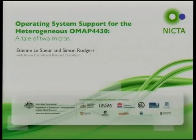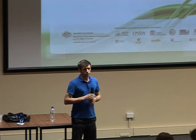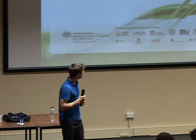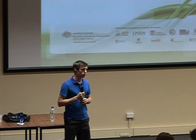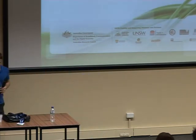We'd noticed that TI had recently announced the new OMAP 4430 processor and a new development kit called the PandaBoard. We took a deeper look and found it had interesting features - it was not just a dual-core Cortex-A9 ARM SoC, but also had two Cortex-M3 microcontrollers, giving four general-purpose cores in total. Prior to this work, Linux only looked at the A9 cores, presented in typical symmetric multiprocessing fashion.